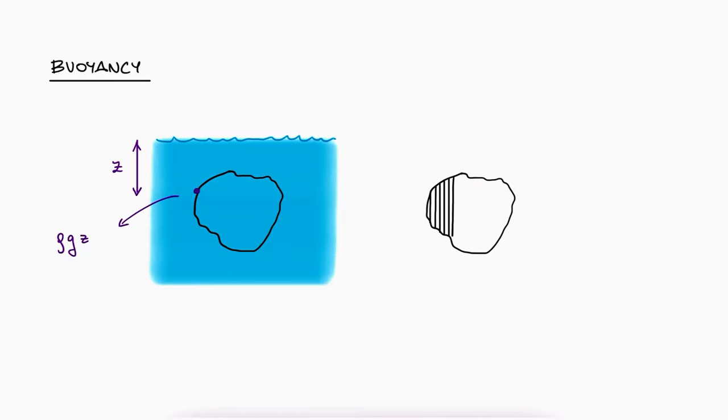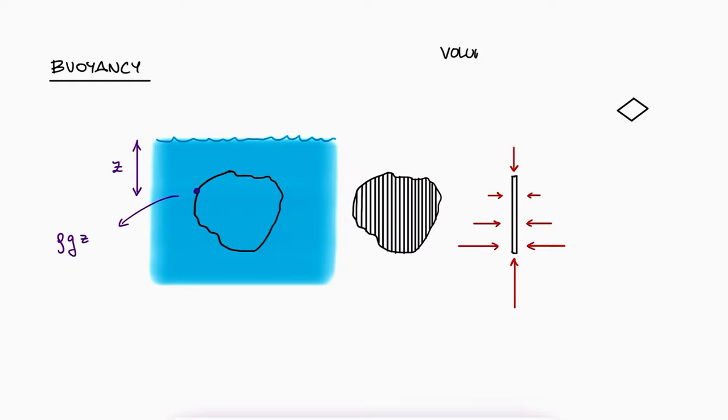If we think of this object as a collection of infinitesimal columns of material, we can write the forces due to the pressure that affect any of them. The volume of the column would be the infinitesimal horizontal cross-section area dA times the height of that specific column.